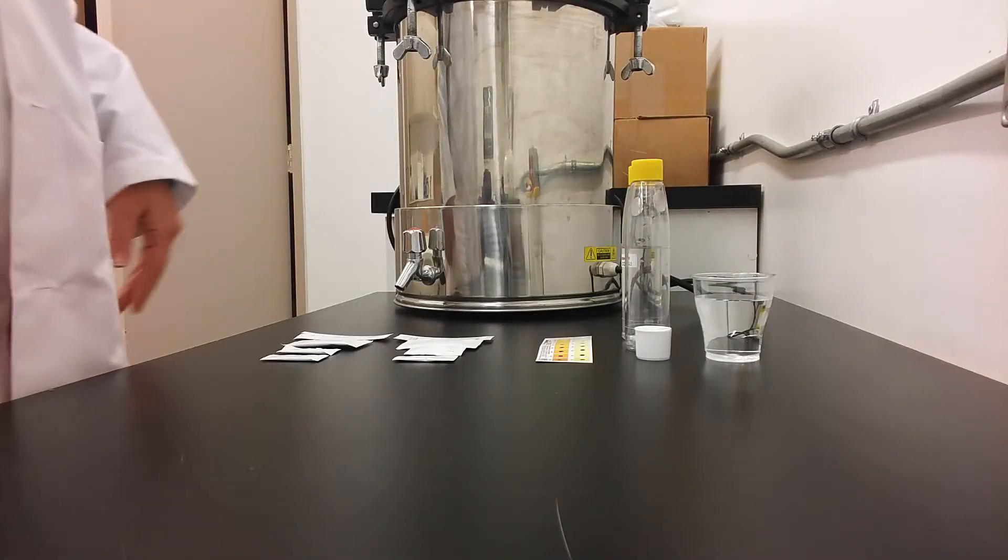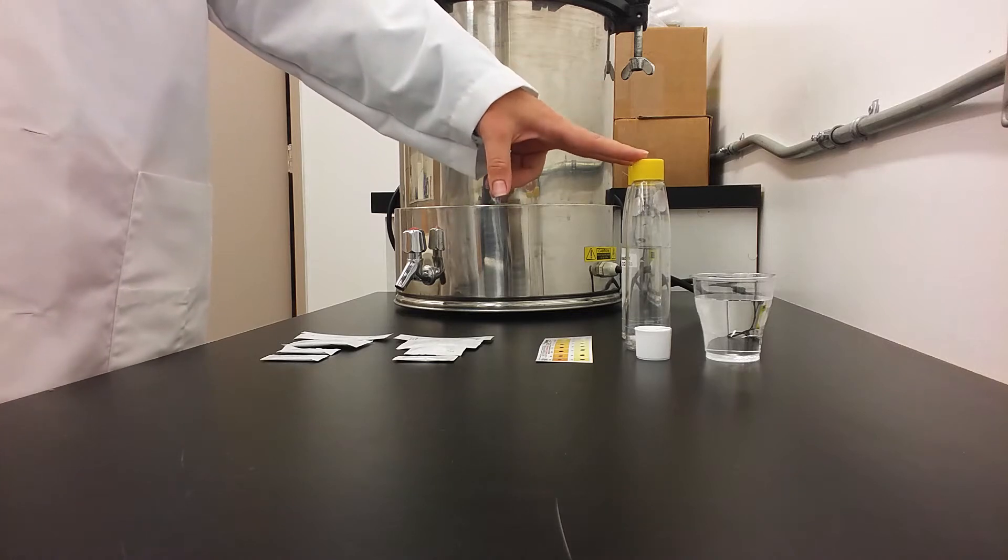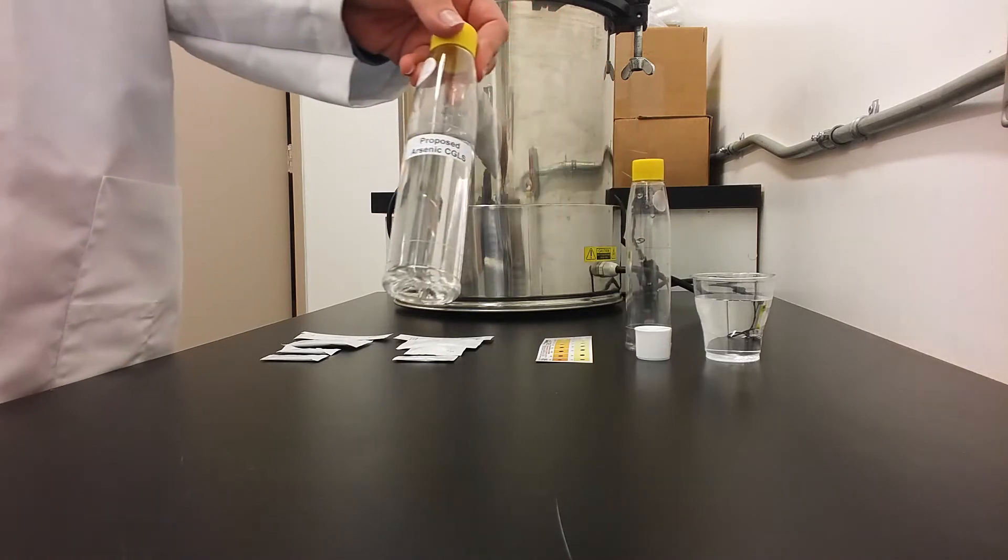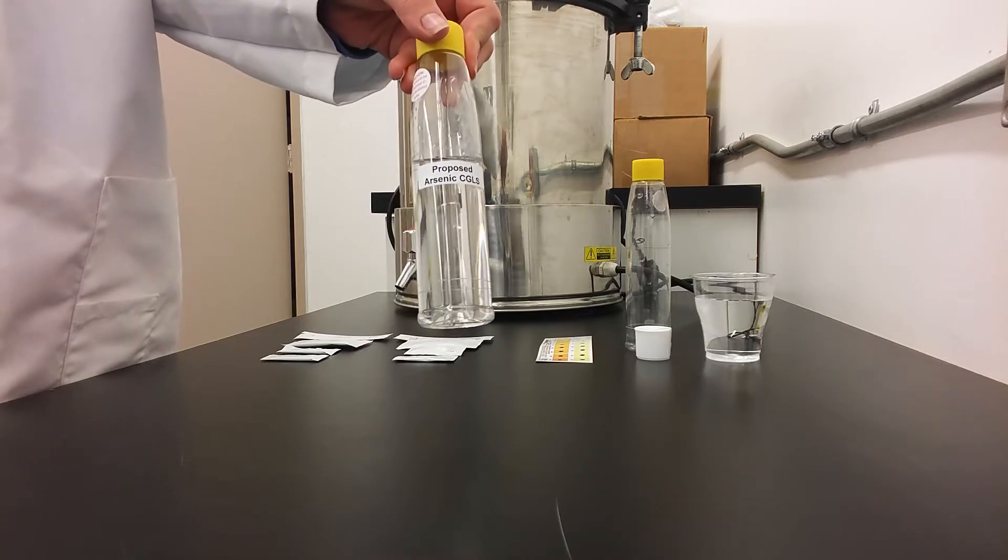For the arsenic test, you will need the two plastic bottles that come with the Operation Water Drop Kit, one of which is filled with the Canadian Guidelines Standard Sample.